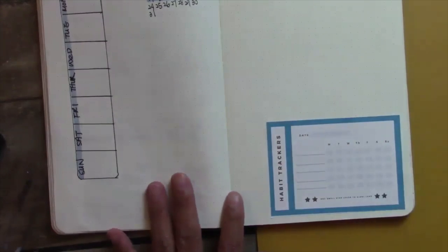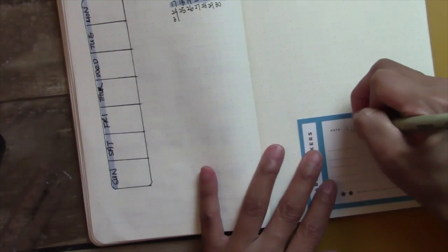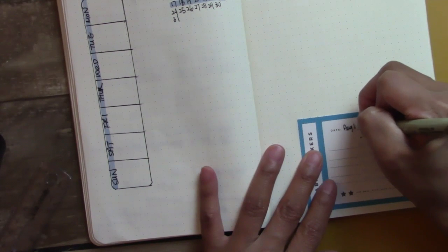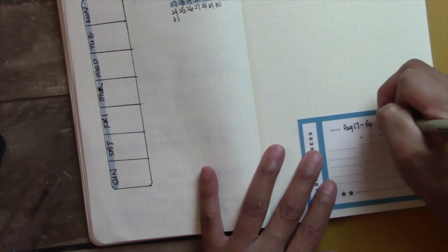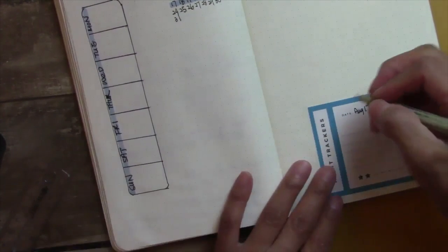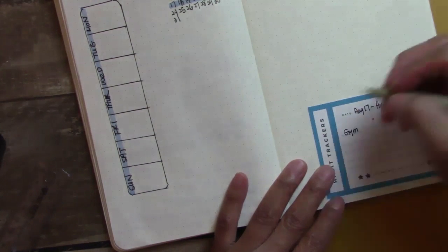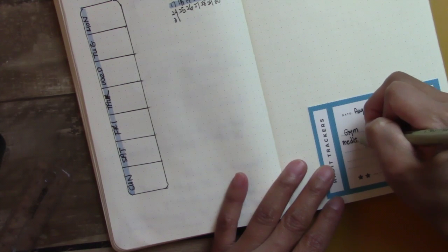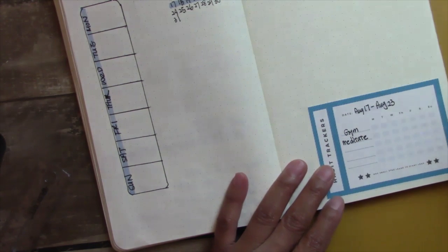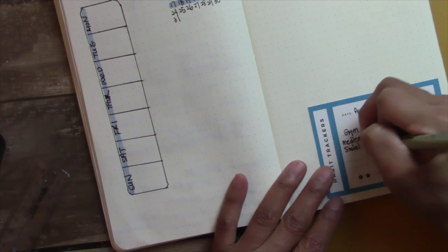What I typically track is my gym time. Even though right now it's pandemic, our gym is closed, but I use the gym time as a way to track my exercises throughout the week. And I also do meditation. Meditation I try to do it every day. Sometimes I don't get to it, so I wanted to make sure that I have a place to track it.